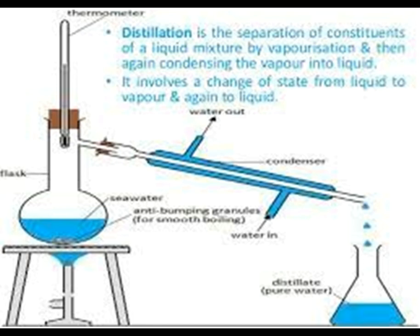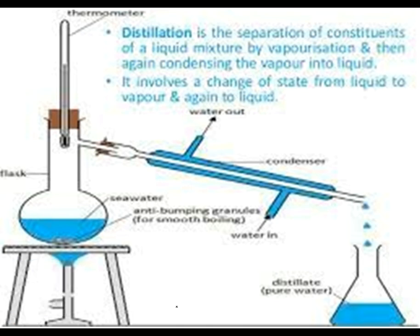Today you will also learn about distillation. Distillation is a separation of constituents of a liquid mixture. When we have a liquid mixture and we want to separate them, distillation is the selected method. Now, looking at the apparatus: here we have a round bottom flask, a thermometer, a tripod stand, a Bunsen burner, a water condenser, and a conical flask to collect the distillate.